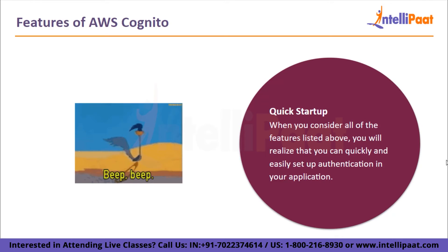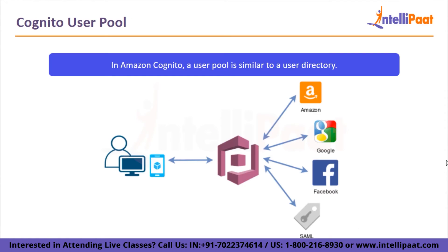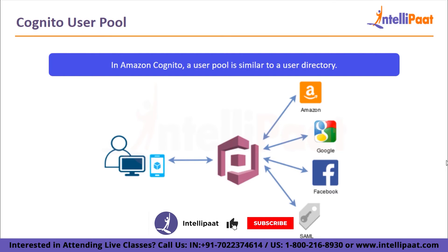Now let's move on to our next agenda: Cognito user pool. In Amazon Cognito, a user pool is similar to a user directory. Your users can sign in to your web or mobile app using it. Users can also sign in via social identity providers such as Google, Facebook, Amazon, Apple, and SAML identity providers.